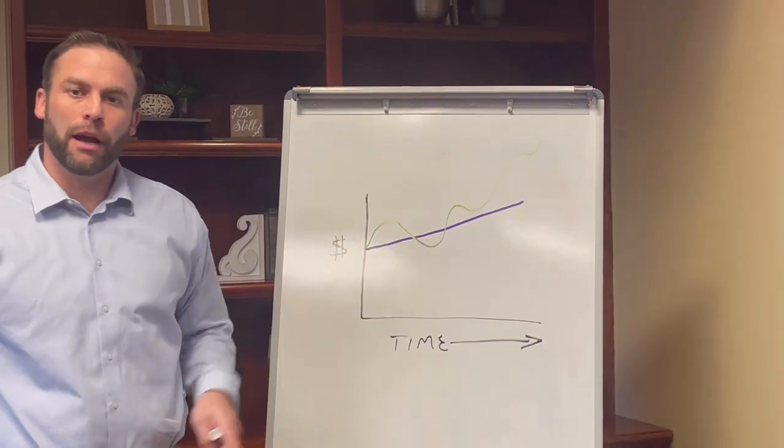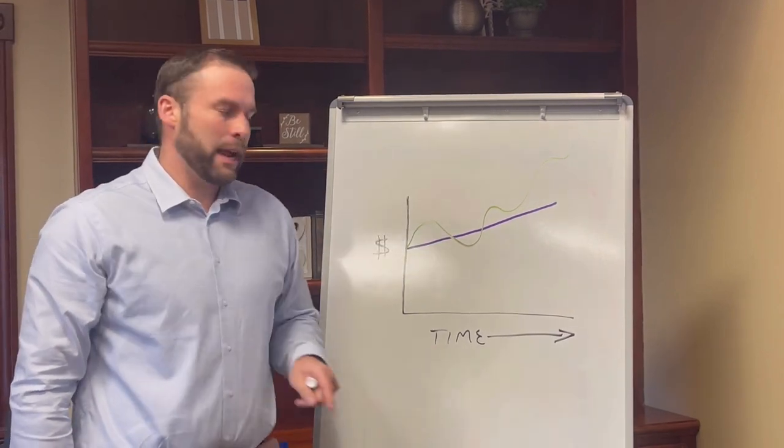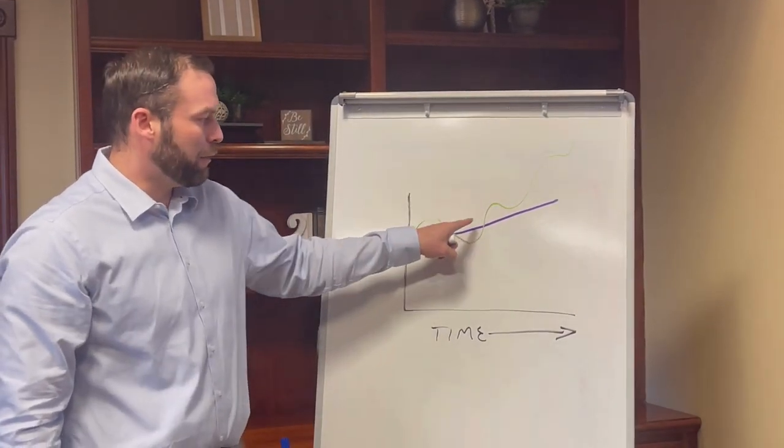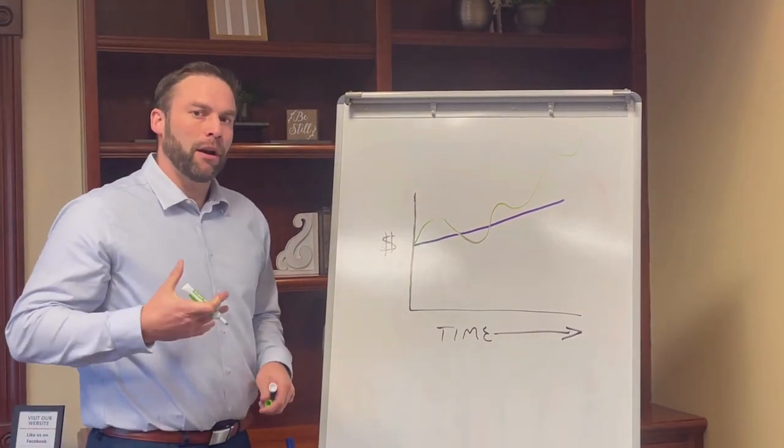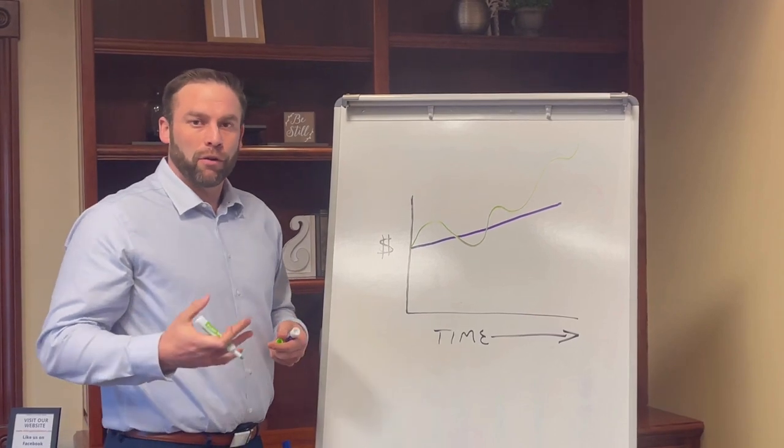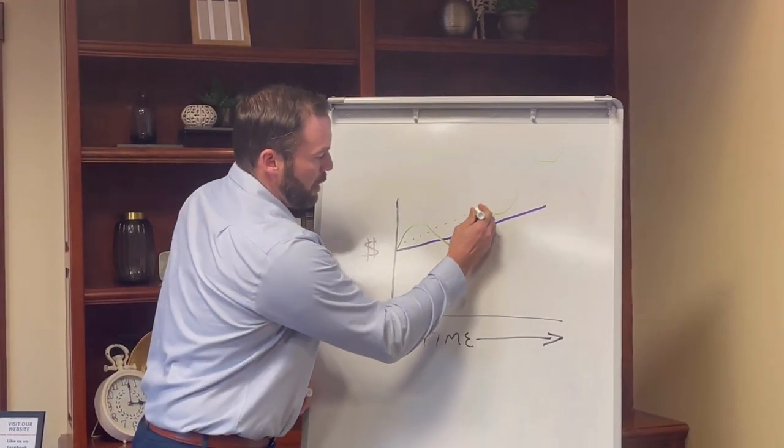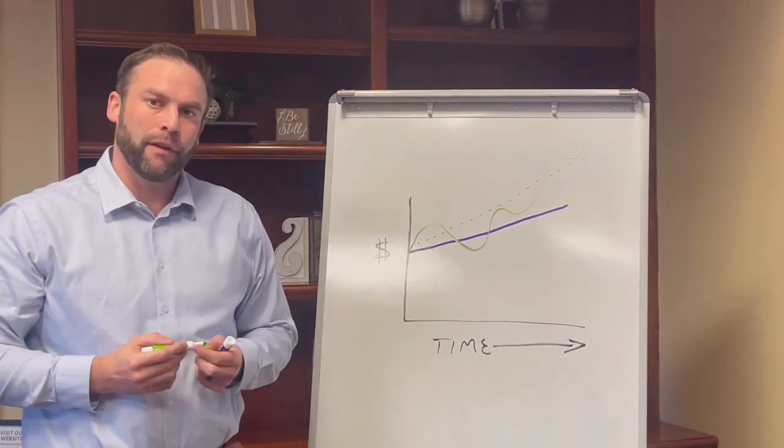Josh did a great Tip Tuesday either last week or the week before on the emotions in the market cycle, where he went through these peaks and troughs. But that's really the difference between rate of return and interest. When we look at what our average return was over a period of time, what you're really looking for is what was that middle return line in that volatile investment.